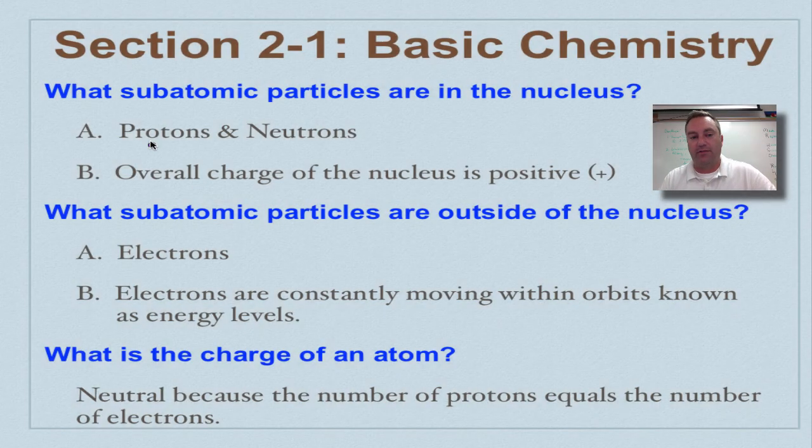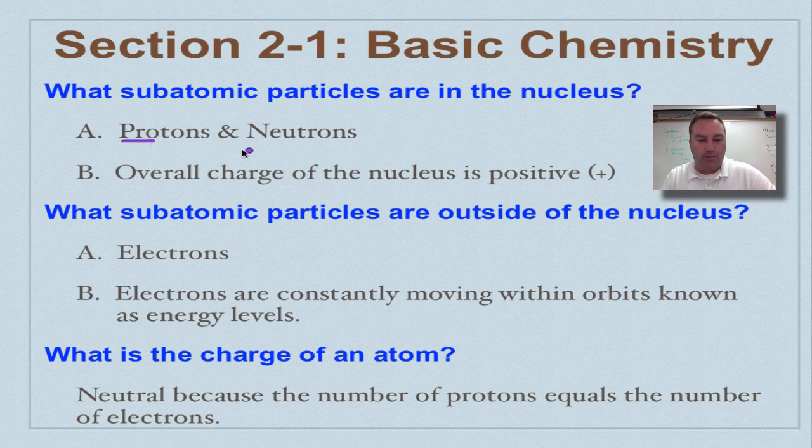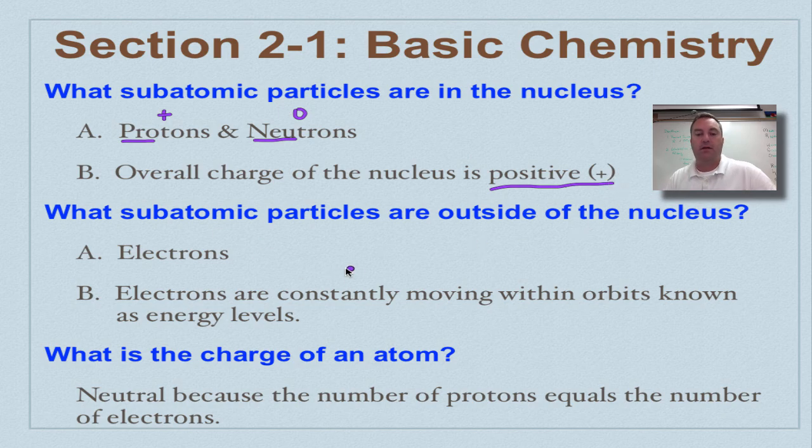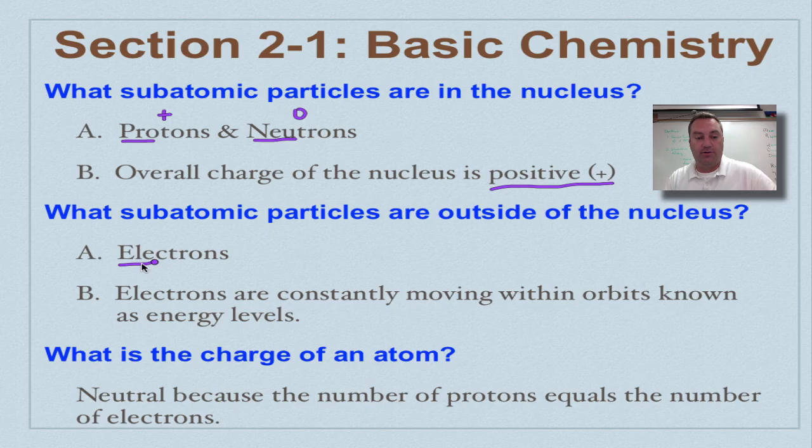Which subatomic particles are going to be found in the nucleus? Those are going to be your protons and your neutrons. Remember, these guys have a positive charge. These have a neutral charge. Therefore, the overall charge of the nucleus is going to be positive.